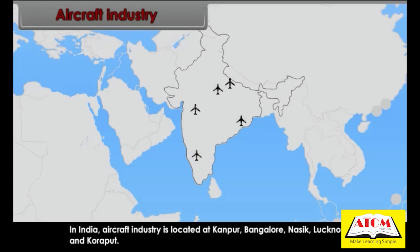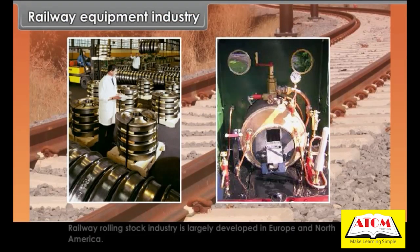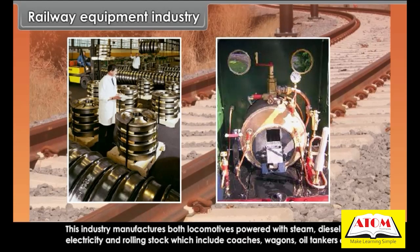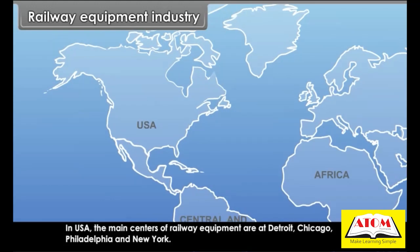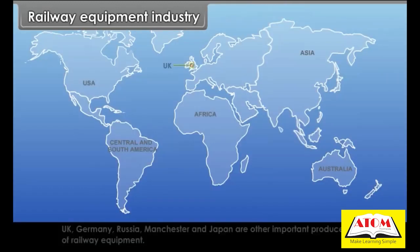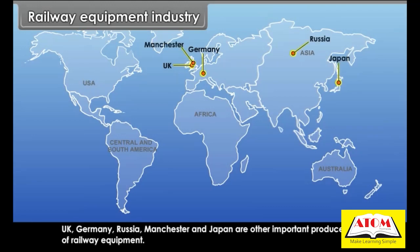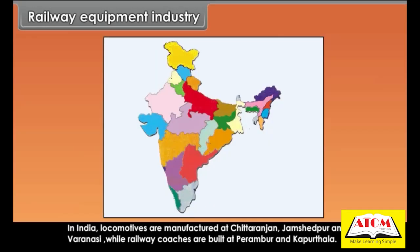Railway rolling stock industry is largely developed in Europe and North America. It manufactures locomotives powered with steam, diesel, or electricity, and rolling stock including coaches, wagons, and oil tankers. In the USA, main centres are Detroit, Chicago, Philadelphia, and New York. UK, Germany, Russia, Manchester, and Japan are other important producers. In India, locomotives are manufactured at Chittaranjan, Jamshedpur, and Varanasi, while railway coaches are built at Perambur and Kapurthala.